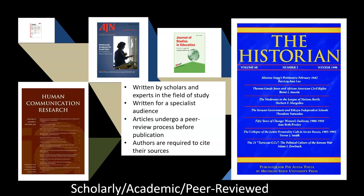Scholarly articles undergo a peer review process, which means that the article is evaluated or reviewed by other experts in the author's field before it can be published. Unlike popular articles, scholarly articles are usually lengthy, and because they are written for academic audiences, articles include the use of academic or technical language.